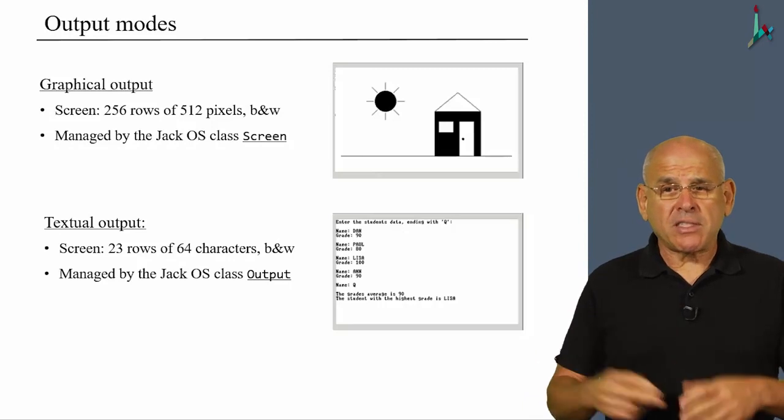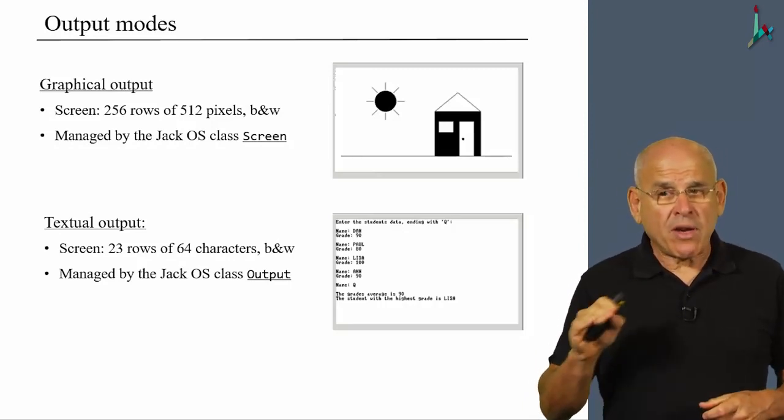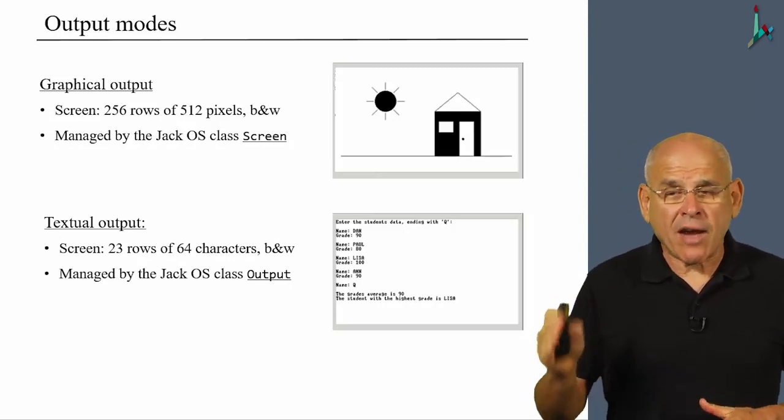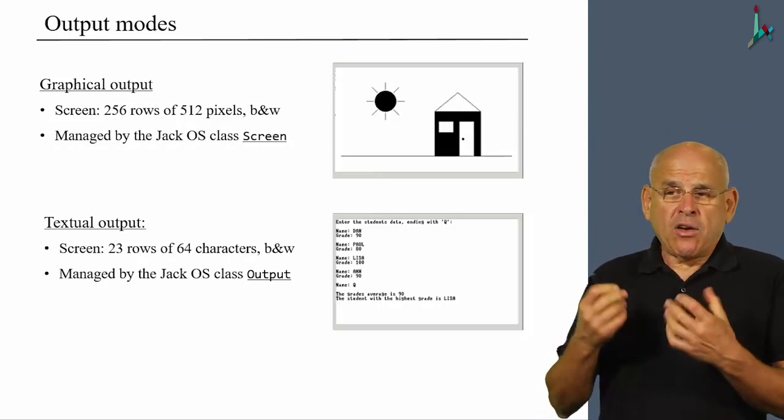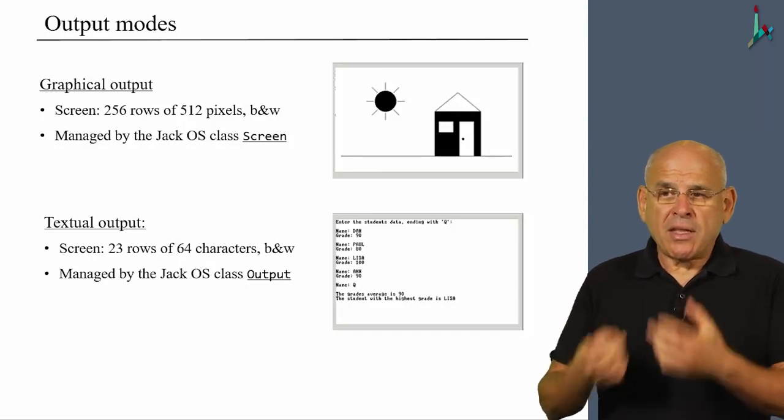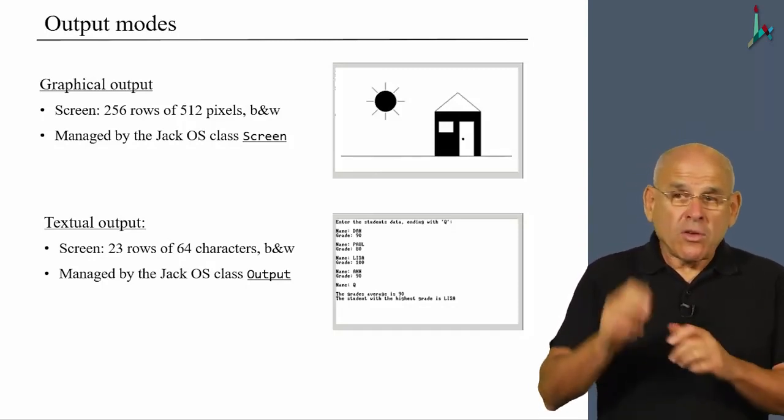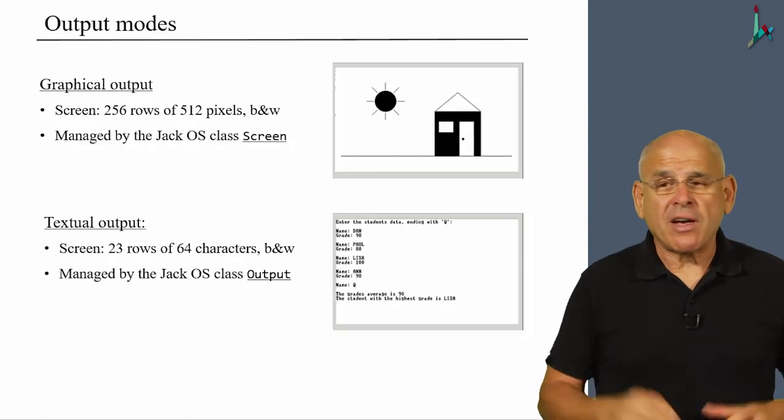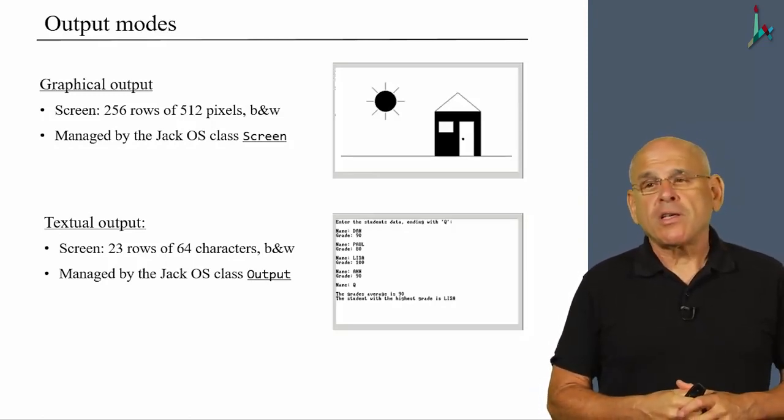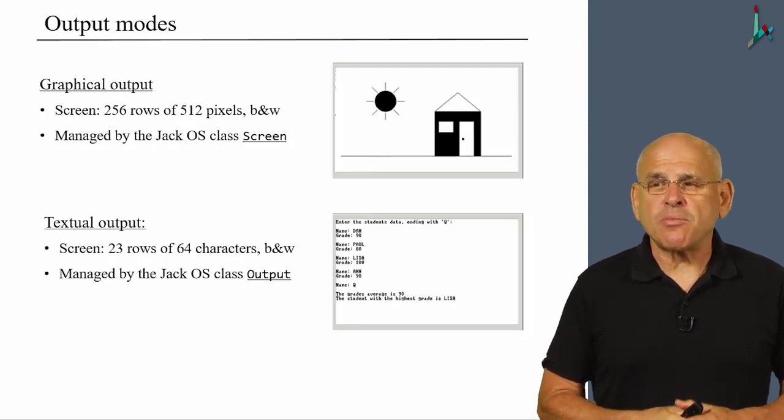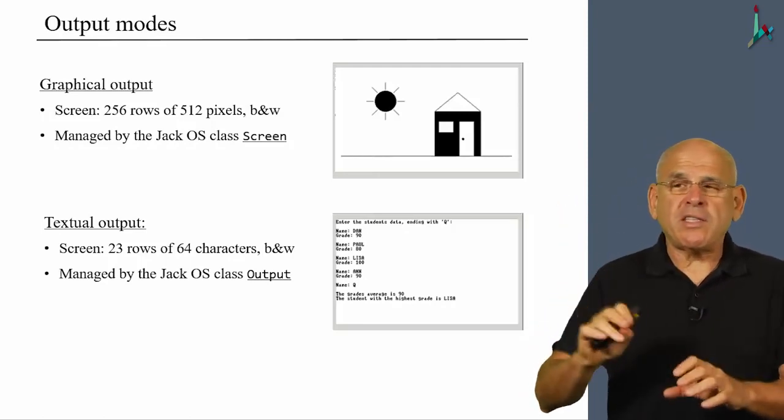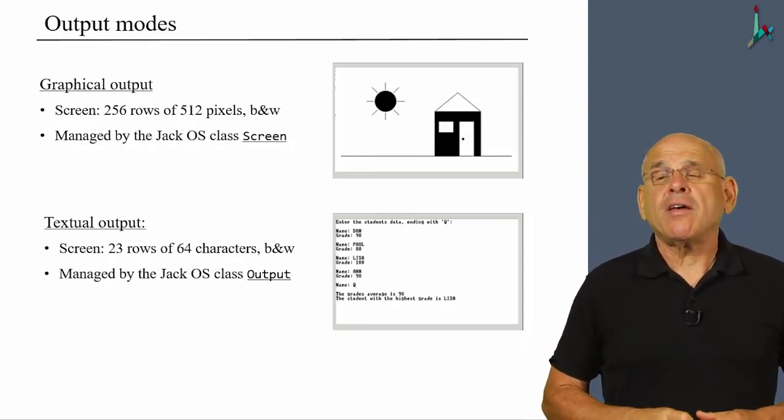we can think about the screen as a grid of 23 rows by 64 characters each, black and white once again. In order to use the screen in this fashion, we don't use the screen class. We use a completely different class called output. These two classes, the screen and the output classes, provide two different ways to think about and operate the screen.